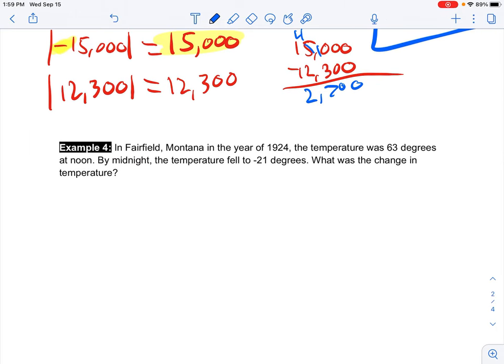All right, let's take a look. In Fairfield, Montana, in the year 1924, the temperature started at 63 degrees at noon. By midnight that night, the temperature fell to negative 21 degrees. What was the change in the temperature? So we're going to take our new minus original. Again, it started at this temperature. It ended at this one, which was our new temperature. So I'm going to say negative 21, subtracting 63.